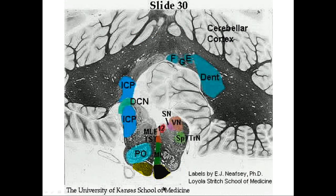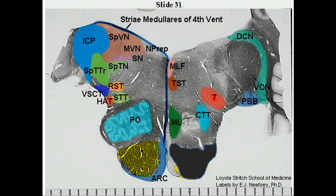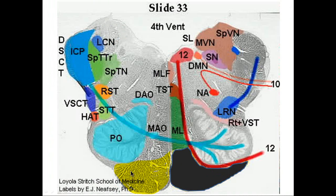Now we're at the level of the medulla — we know this because we can see the olive, the inferior cerebellar peduncle, and the pyramid. The corticospinal tract, which was in the center of the pons, is now moving ventrally in the medulla, piling up into a nicely shaped pyramid. Here you can see the pyramid again, along with the principal olive and inferior cerebellar peduncle at approximately the level of the vestibular complex.